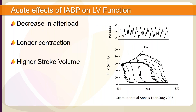Let's discuss the acute effects of the intra-aortic balloon pump on left ventricular function. On the top we see the aortic pressure waveform, followed by the start of aortic balloon pumping. The intra-aortic balloon pumping induces prolonged ejection beginning with beat 1. The decrease in afterload makes the end-systolic elastance visible, then lowers the contractile state or end-systolic elastance, which then increases the stroke volume.